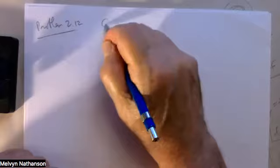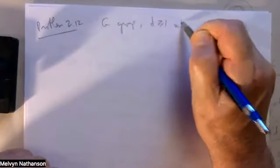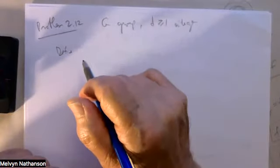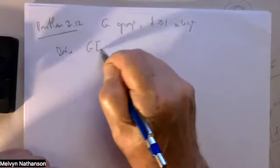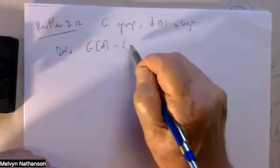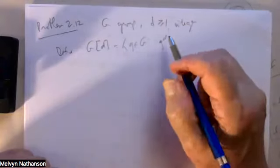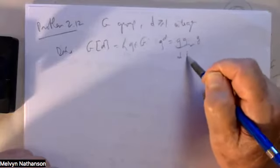Problem 2.12: G is a group, D is a positive integer, and we define a subset of G — written G[d] — which is all elements in the group such that if you take g to the dth power (multiplying g with itself d times) you get the identity. So G[d] is all g in G such that g^d equals the identity.